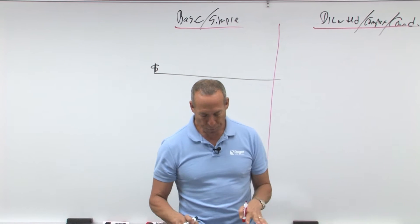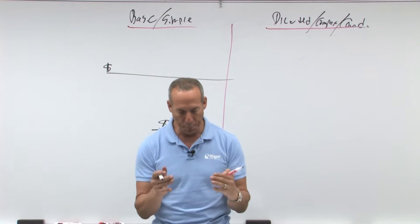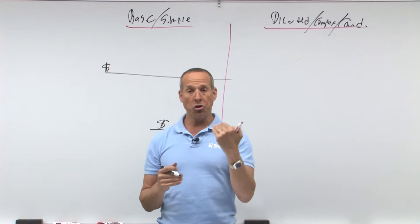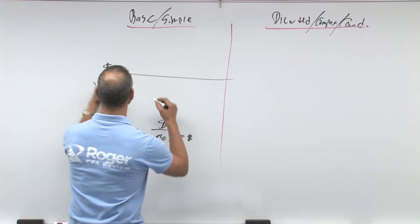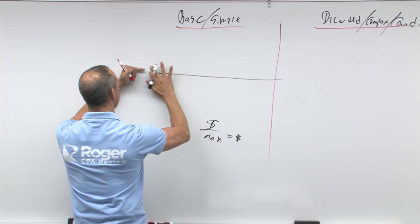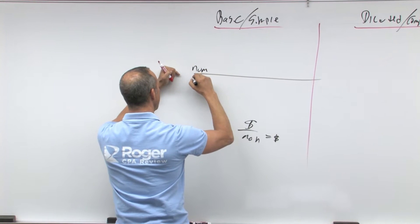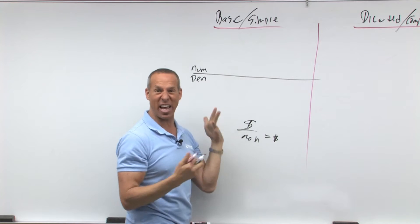Now, in looking at this, first of all, we start out with your simple or basic. Now when you do a formula, the top is the numerator, and I'll put that here, numerator. The bottom is d-d-d-down denominator.